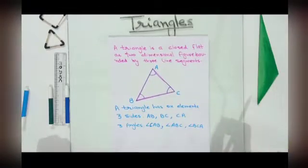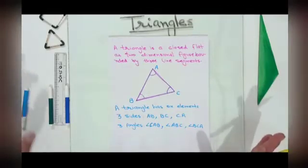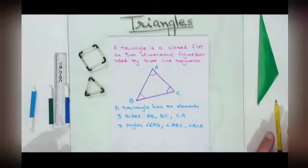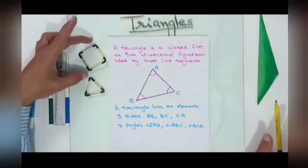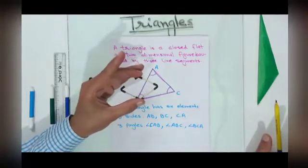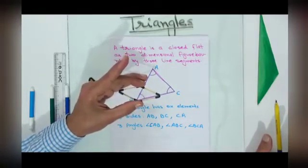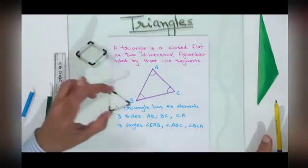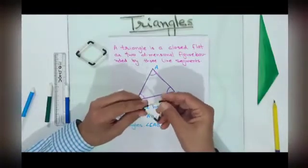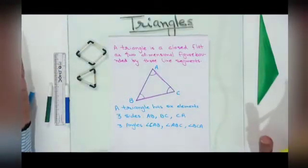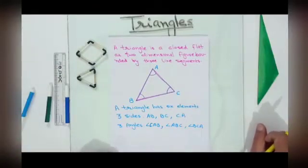Now we can observe that I am having two plane figures — a triangle and a quadrilateral. If I apply a force on the quadrilateral, we can observe that it remains a quadrilateral but its shape gets changed. But if the same amount of force is applied on the triangle, there is no change in its shape. So we can conclude that a triangle is the strongest figure among 2D figures.